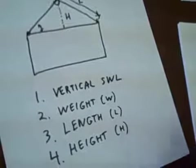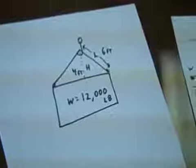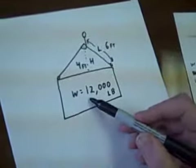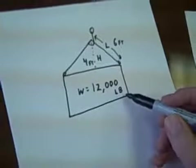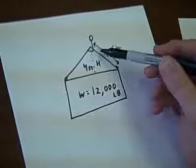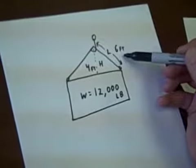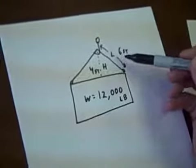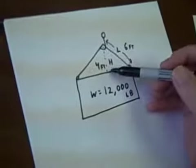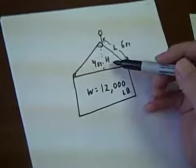So we'll put some real numbers onto this. Let's suppose that the load has a total weight of 12,000 pounds. We have two six-foot straps L, and the distance the hook is above the load is four feet, which is H.